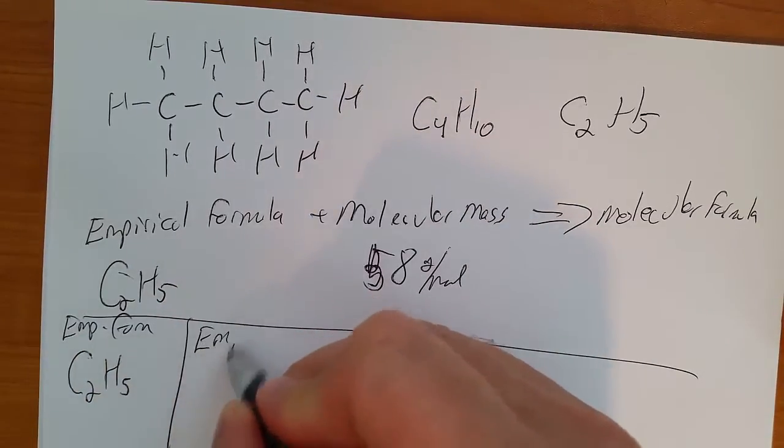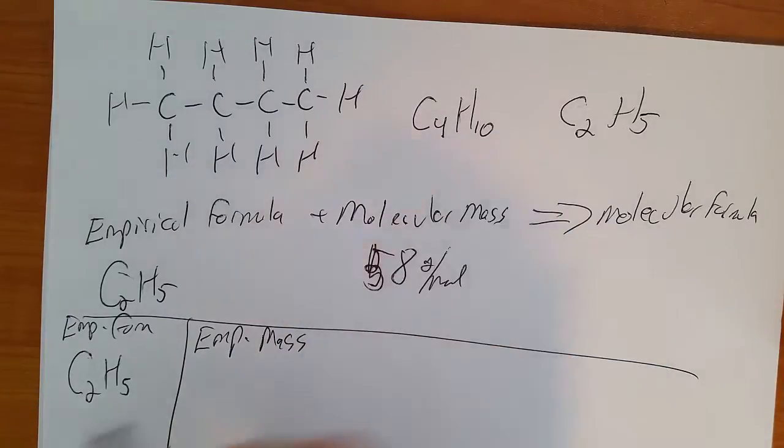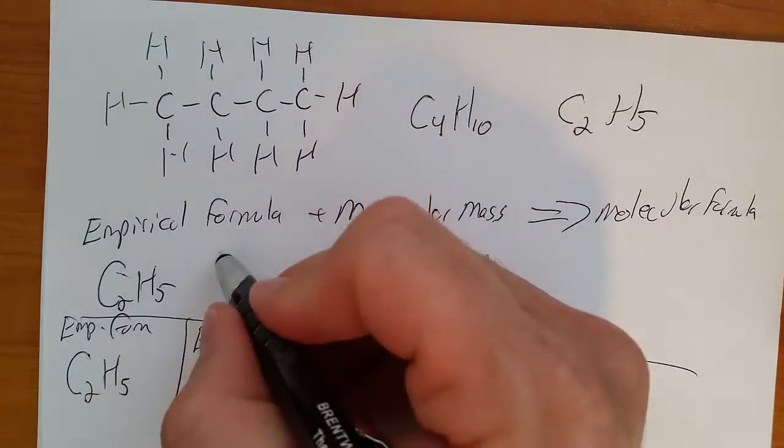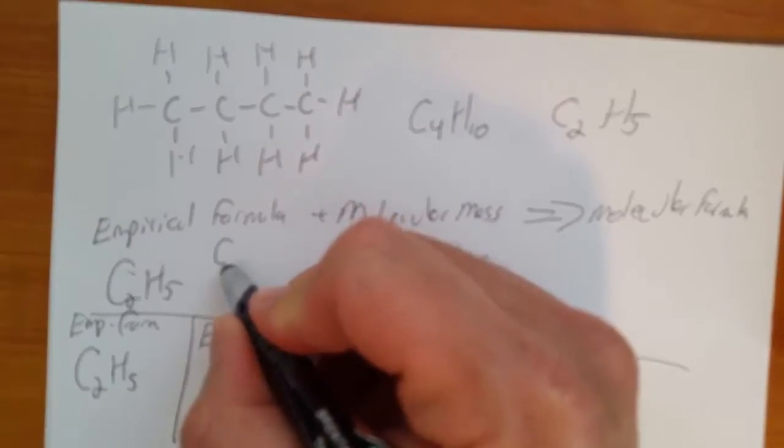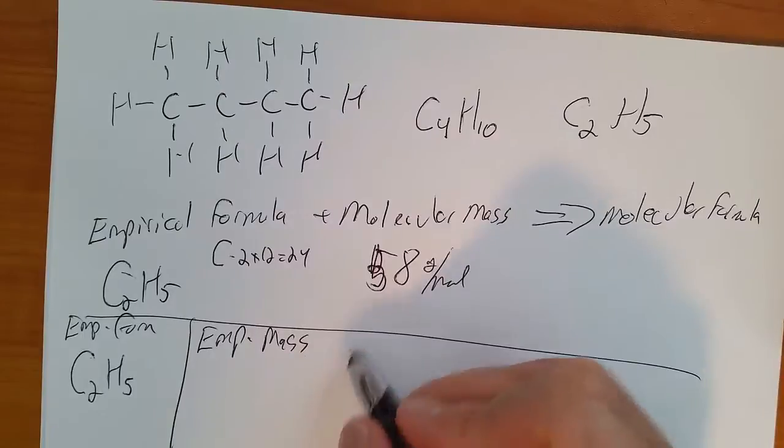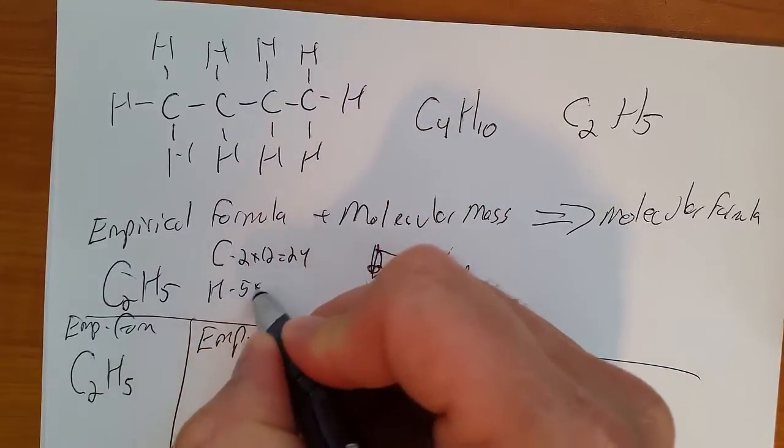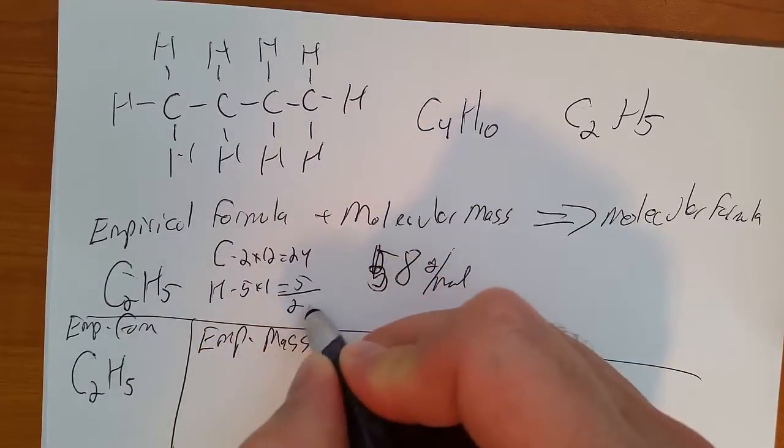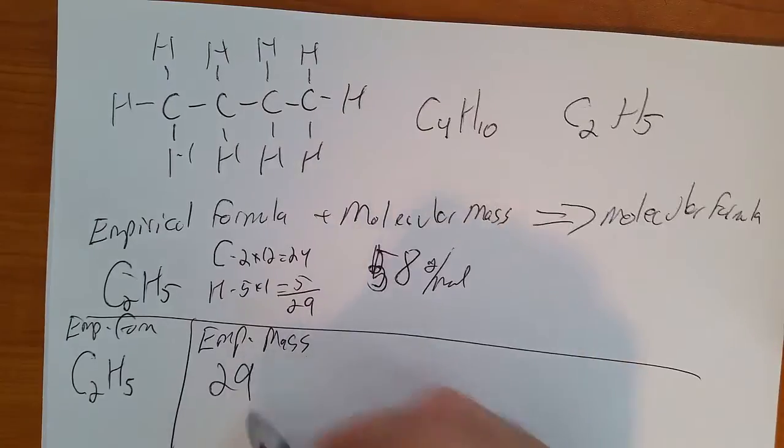Then you write out the empirical mass. The empirical mass of this, C, there's 2 times 12 equals 24. H is 5 times 1 equals 5, so the empirical mass is 29 grams.